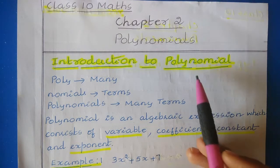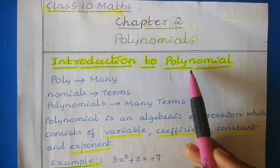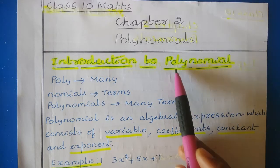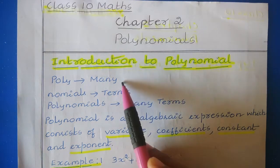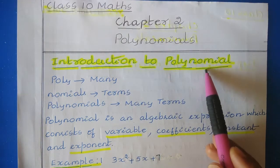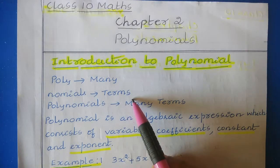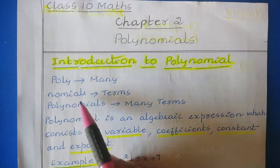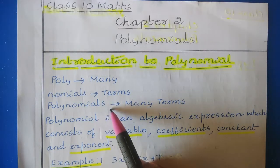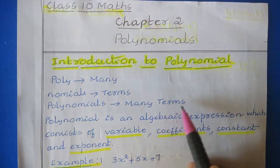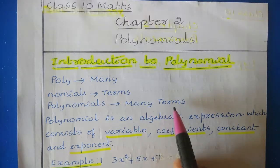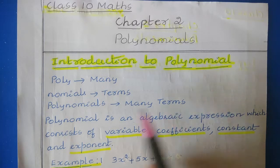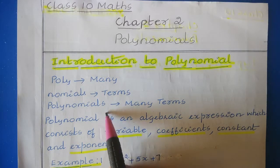The word polynomial has two parts: poly means many and nominal means terms. So polynomials together form many terms — that means a collection of many terms forms a polynomial.